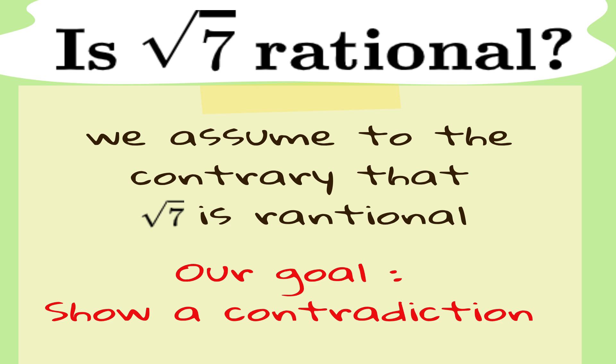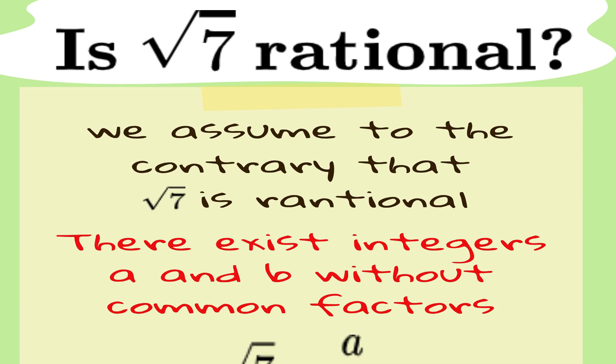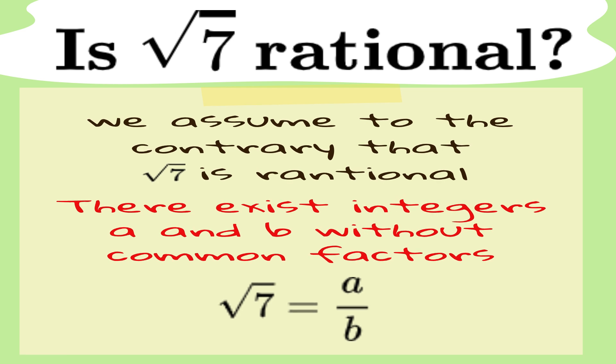Alright, here's the plan. We're going to assume the opposite of what we want to prove. So, let's assume that the square root of 7 is actually rational. That means we could write it as a fraction, where both the top number and the bottom number are integers, and they don't have any common factors. So, let's say the square root of 7 equals a fraction, with the top number being a and the bottom number being b.